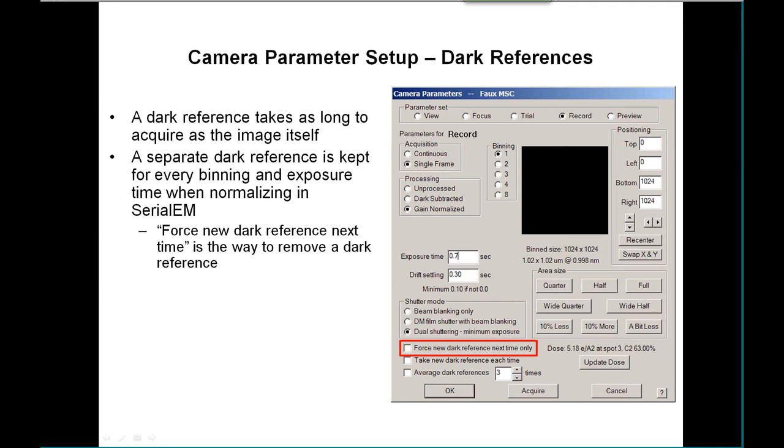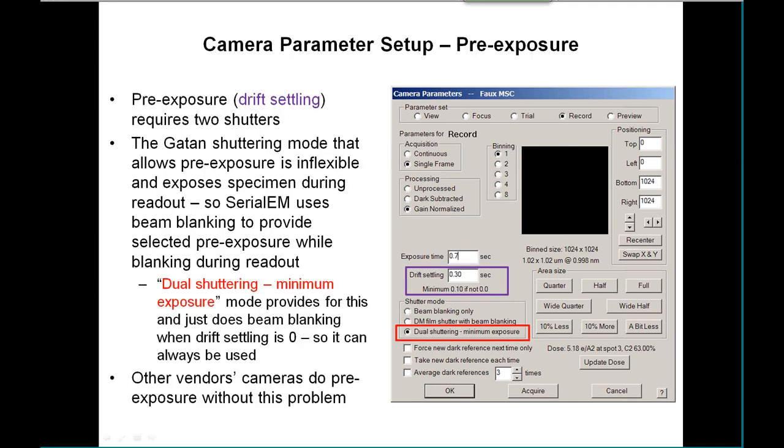When you have the program set up so that it normalizes images in SerialEM, it keeps track of dark references and can keep a separate one for every binning and exposure time that you've been using up to a certain point. The oldest ones will be thrown away as it runs out of memory. The way to get rid of dark references is to use this 'force new dark reference next time' option.